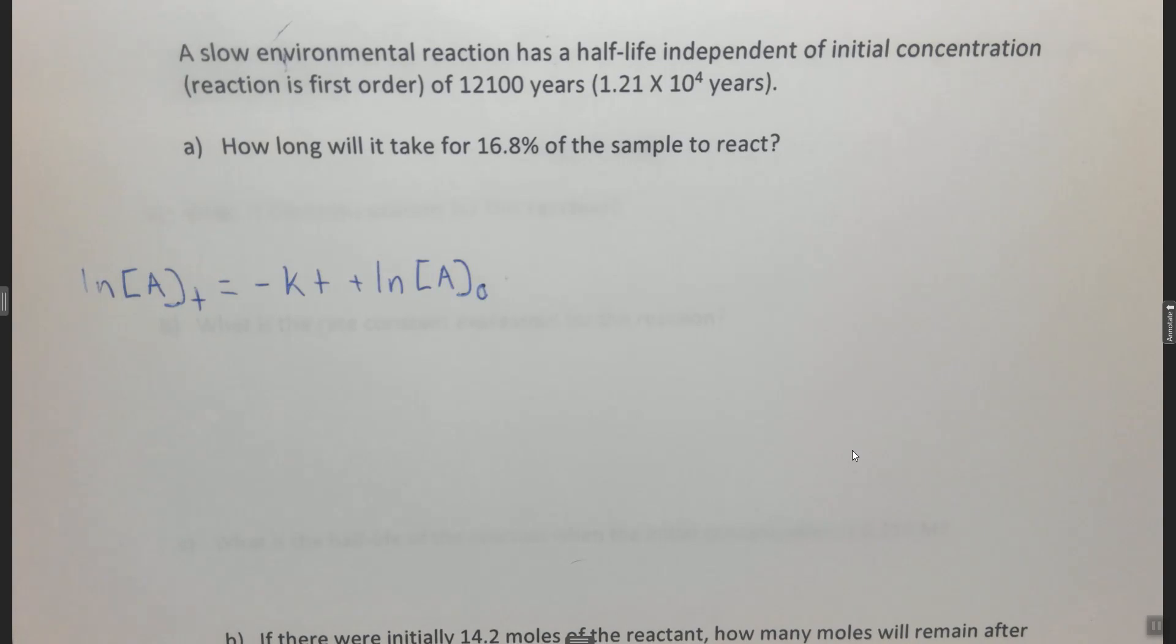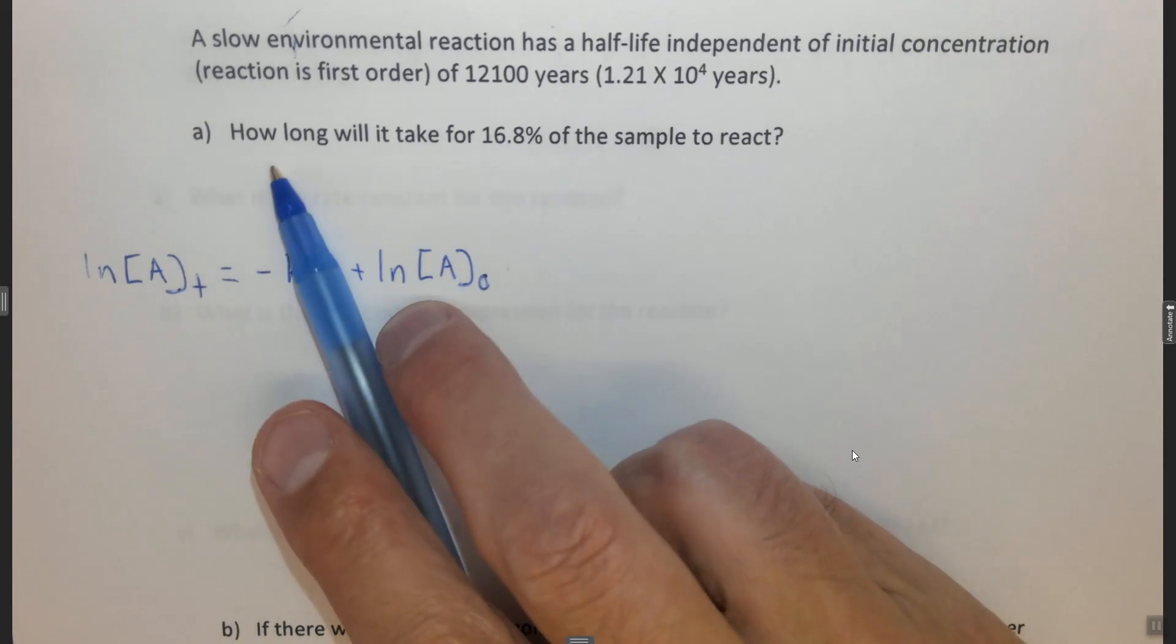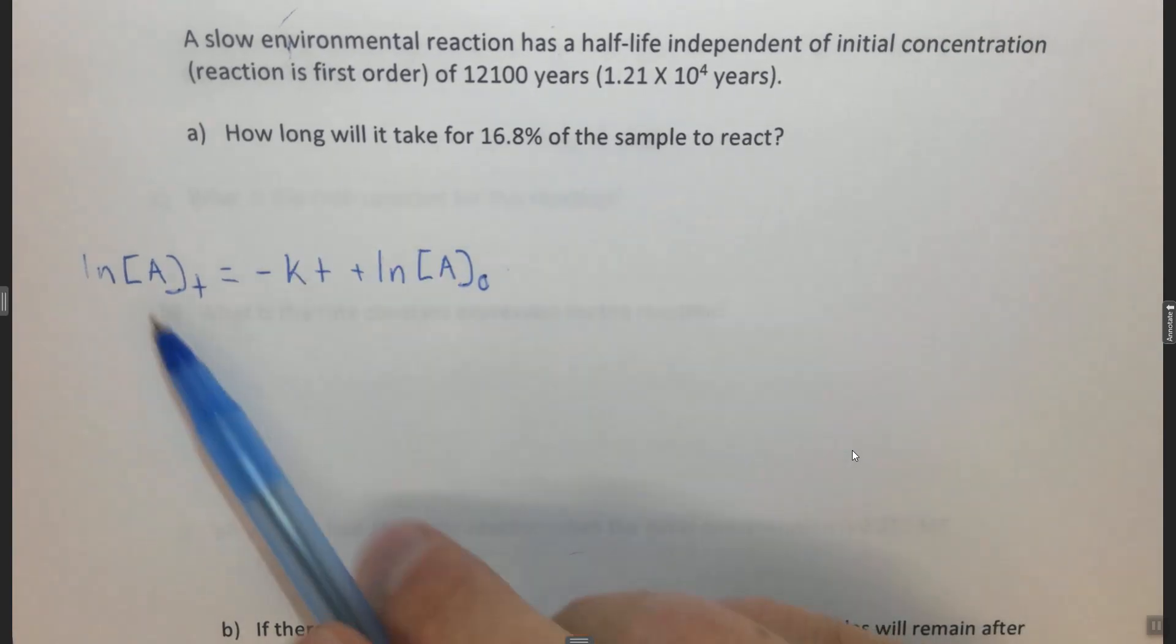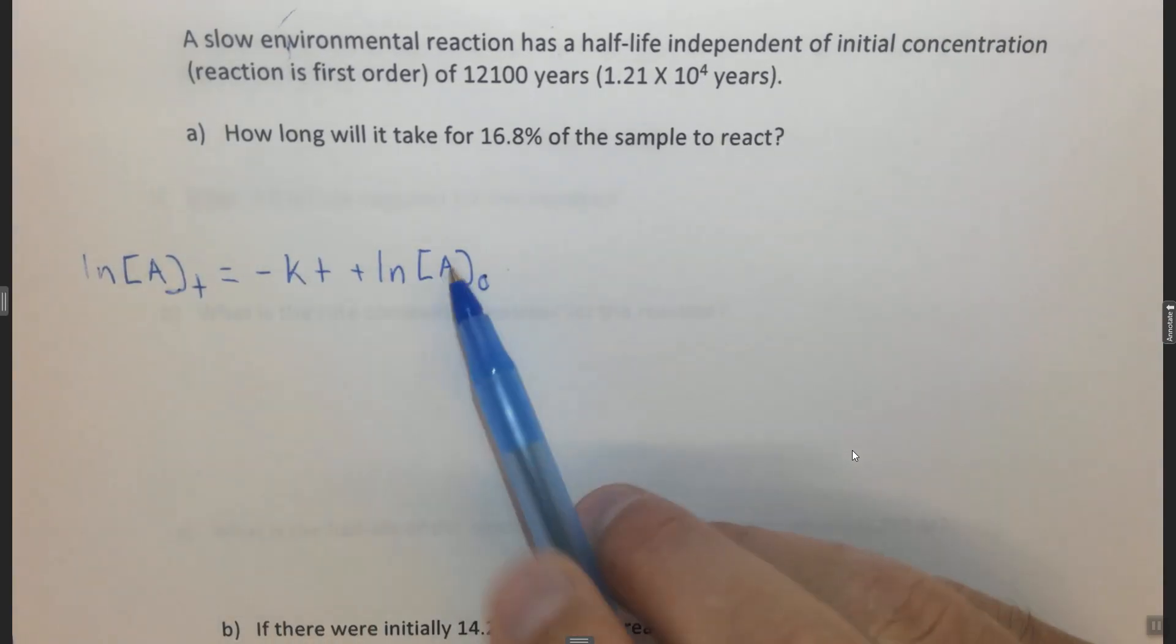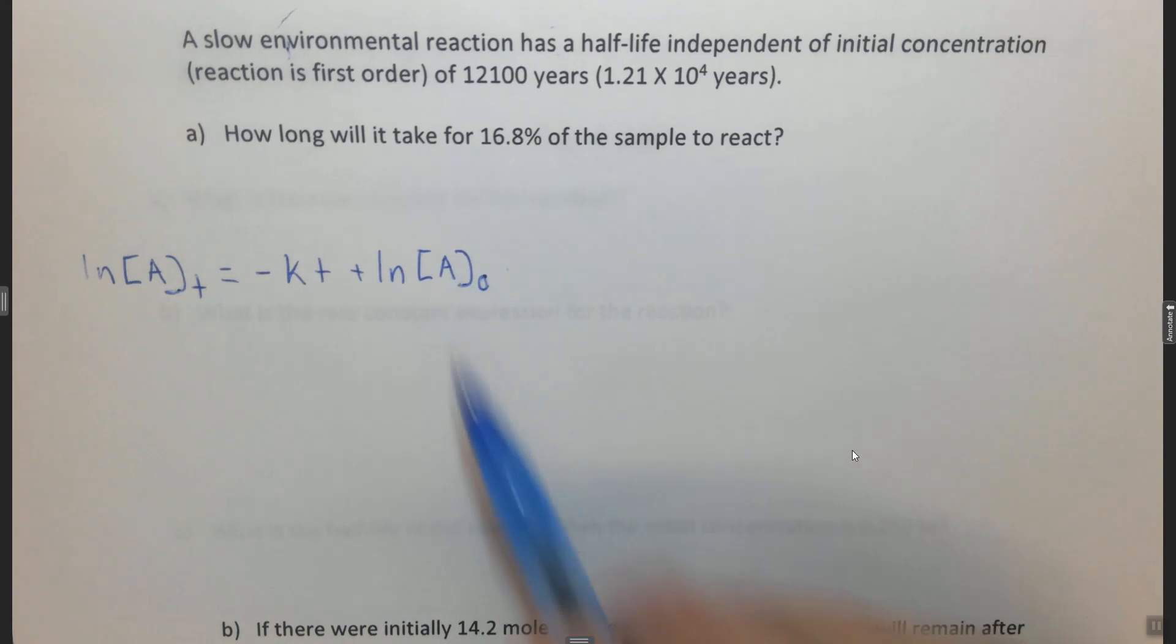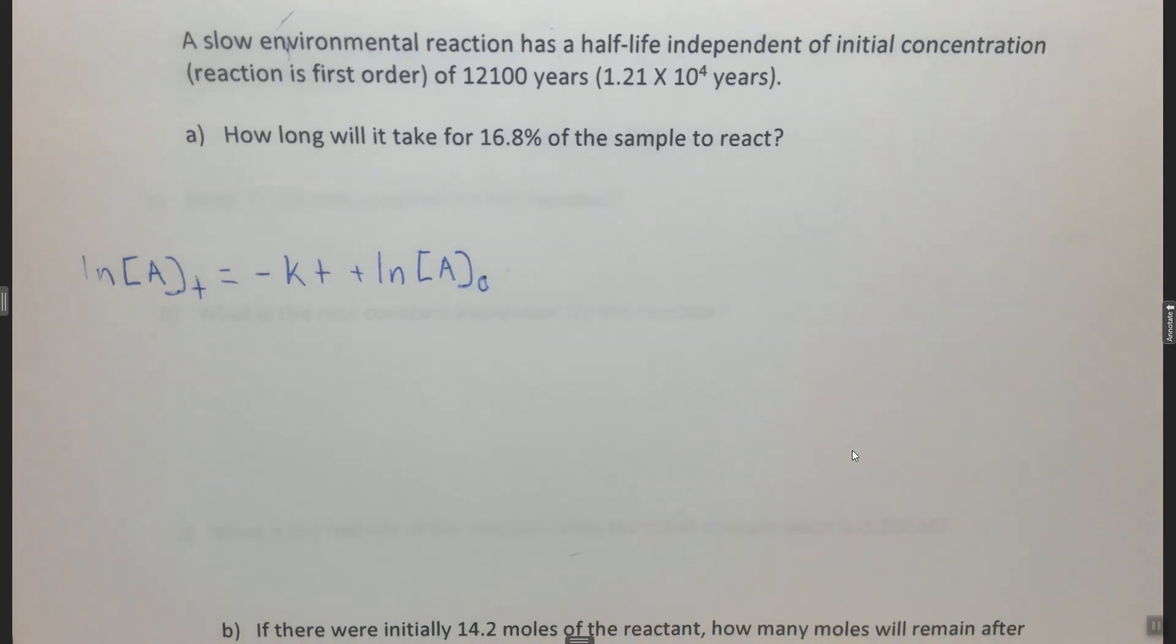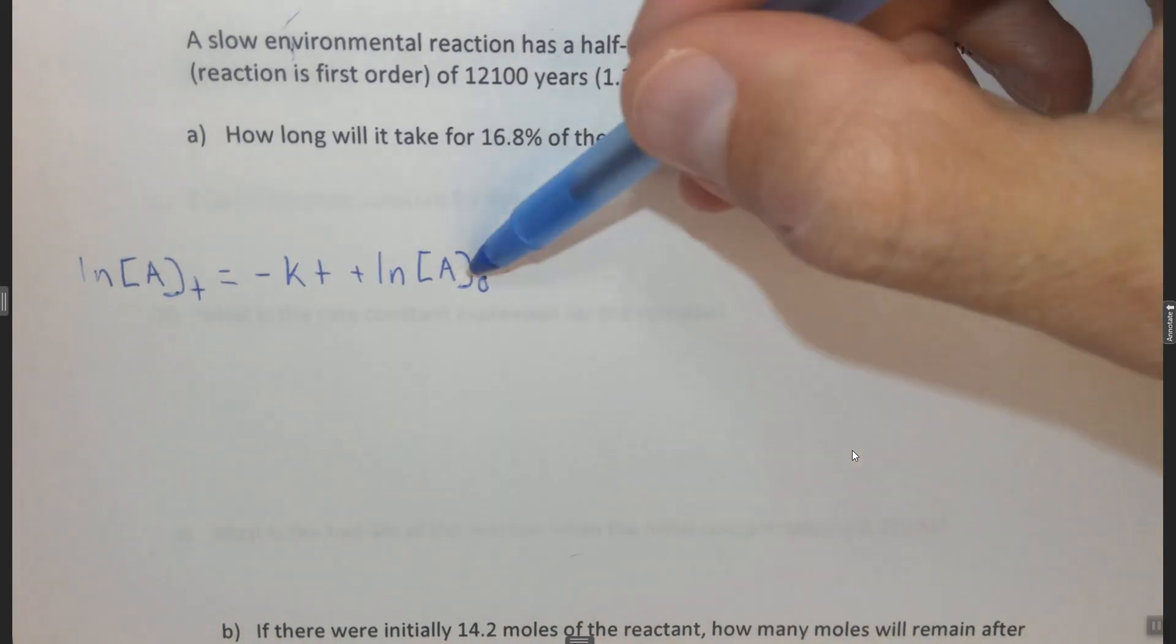Now how are we going to figure these things out? There are a few things we want to find before we can find T. T is what the question is asking, how long. But we need concentration of A at some time and we need the initial concentration of A. Since we don't know these things exactly, we have to make them up.